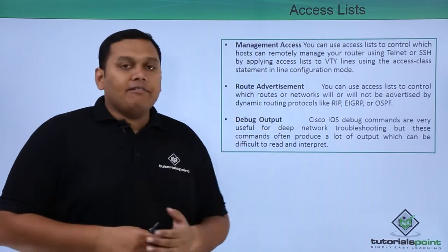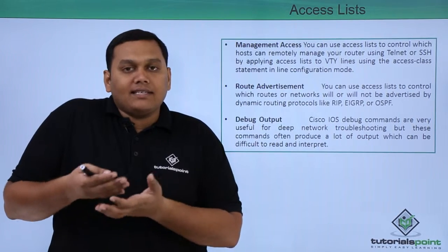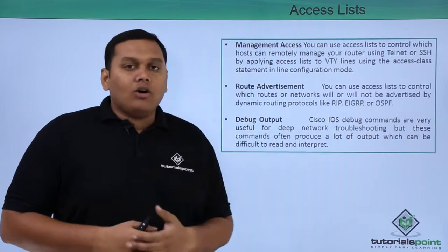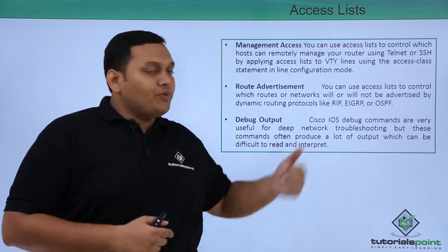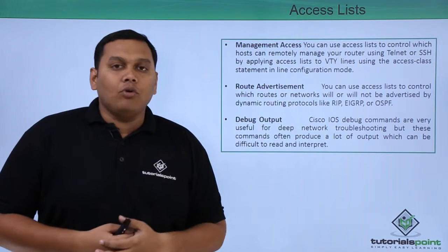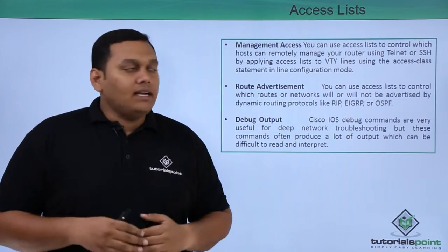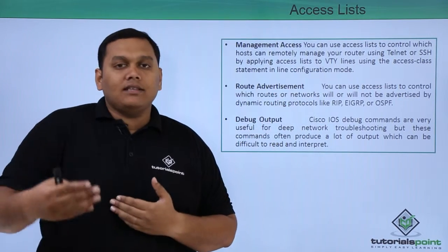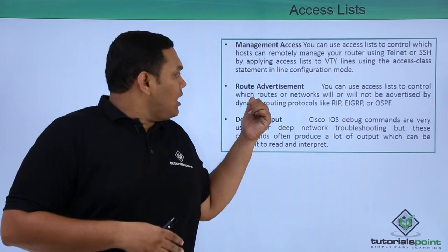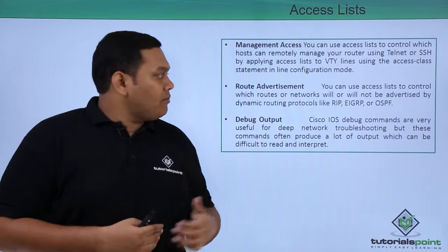There are several types of access available. For management access, you can use this access list to control which hosts can access your router using Telnet or SSH by applying it to VTY lines using the access-class command in line configuration mode. For route advertisement, you can use access lists to control which networks are advertised using protocols like RIP, EIGRP, and OSPF.